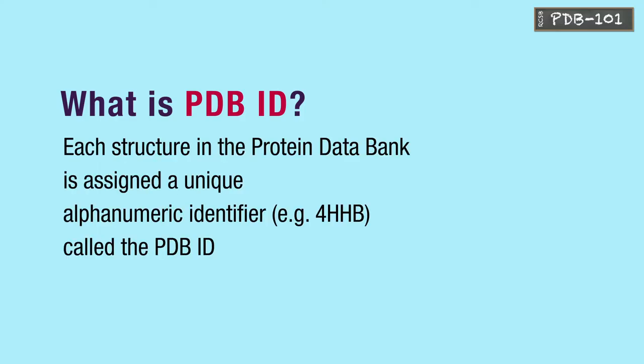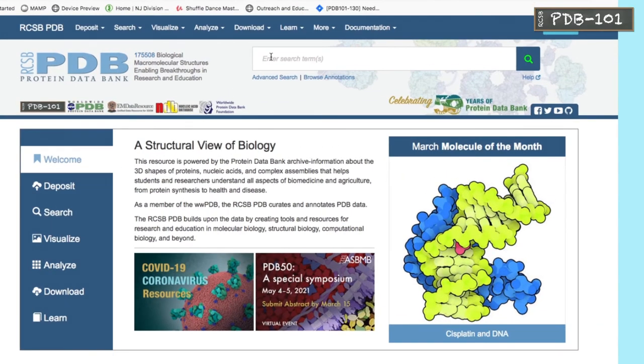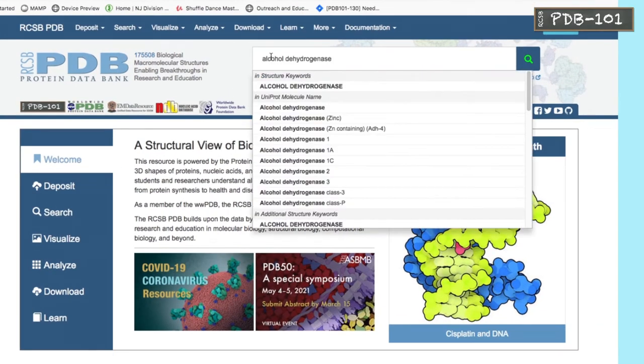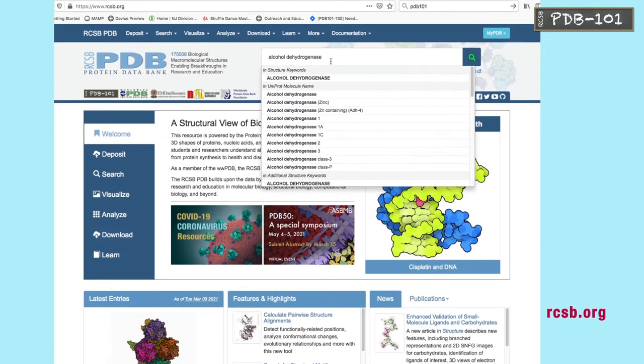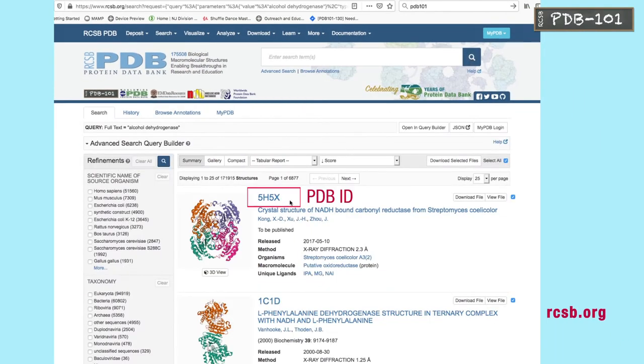Each structure in the Protein Data Bank is assigned a unique alphanumeric identifier called the PDB ID. This ID appears on the first line of search results at rcsb.org.